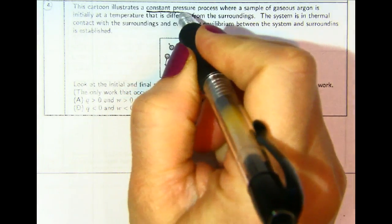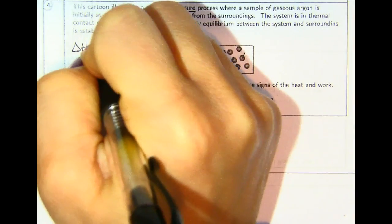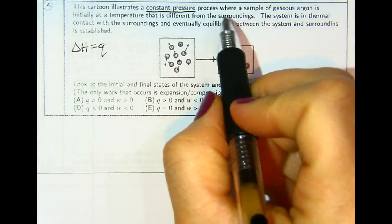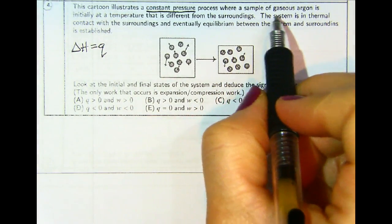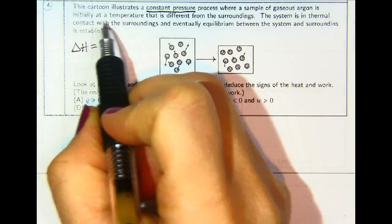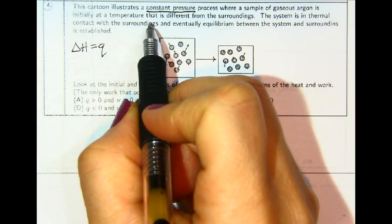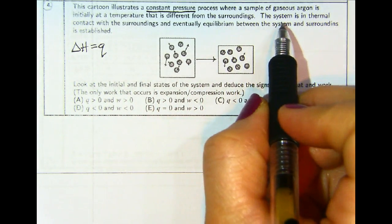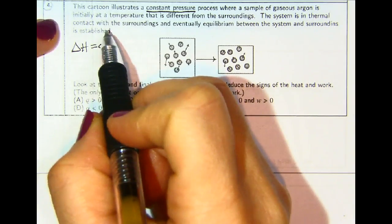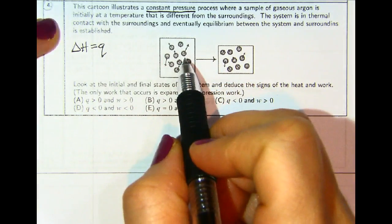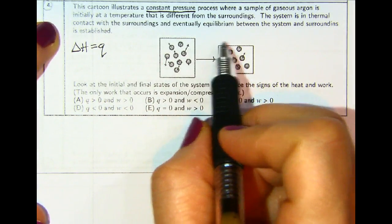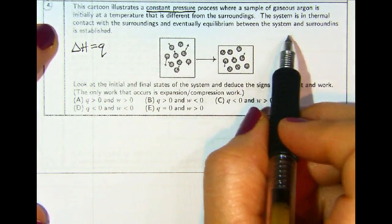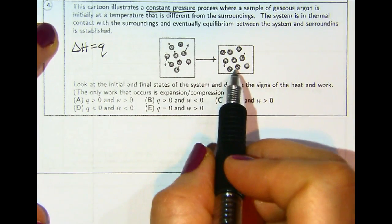When we're told that we're at constant pressure, we should know that delta H will equal Q, where a sample of gaseous argon is initially at a temperature that's different from the surroundings. The system is in thermal contact with the surroundings and eventually equilibrium between the system and the surroundings is established.